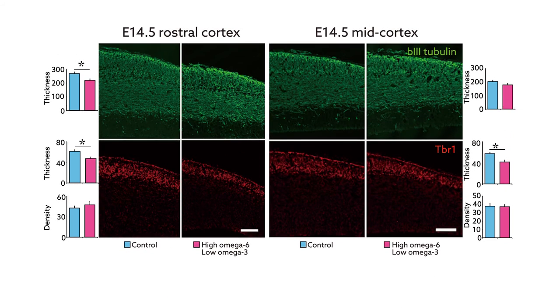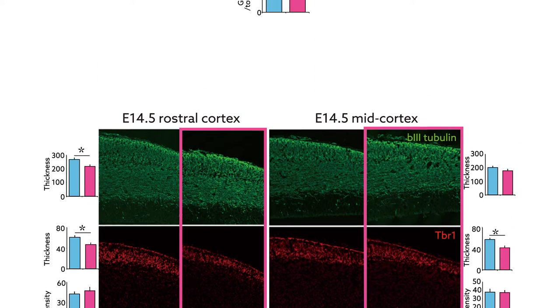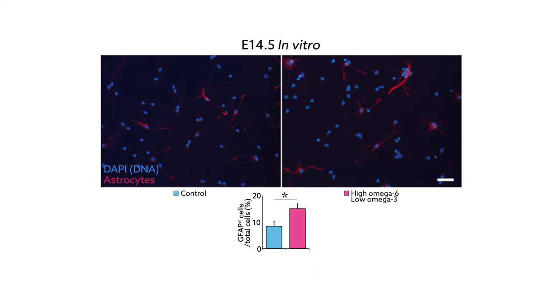The pups of these mothers exhibited abnormally thin neuronal layers in some regions of the brain's neocortex, the part of the brain responsible for motor control and sensory perception. NSCs from these pups also produced greater numbers of astrocytes, a type of glial cell, suggesting that the impaired neocortical development resulted from an increased production of glia by NSCs.